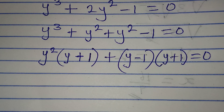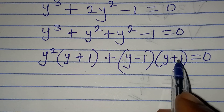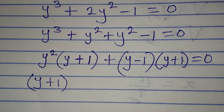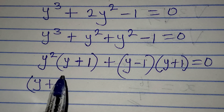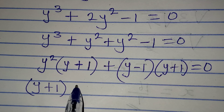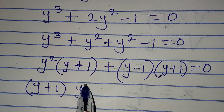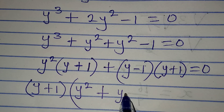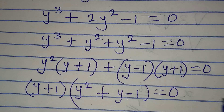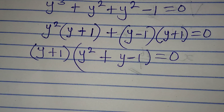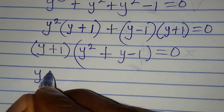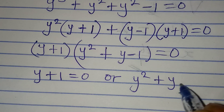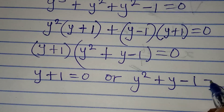Now I can factorize again because I have y plus 1 here and y plus 1 here. I'll factor out y plus 1, and then in the other bracket I'll have y squared plus y minus 1. Both equal to 0.